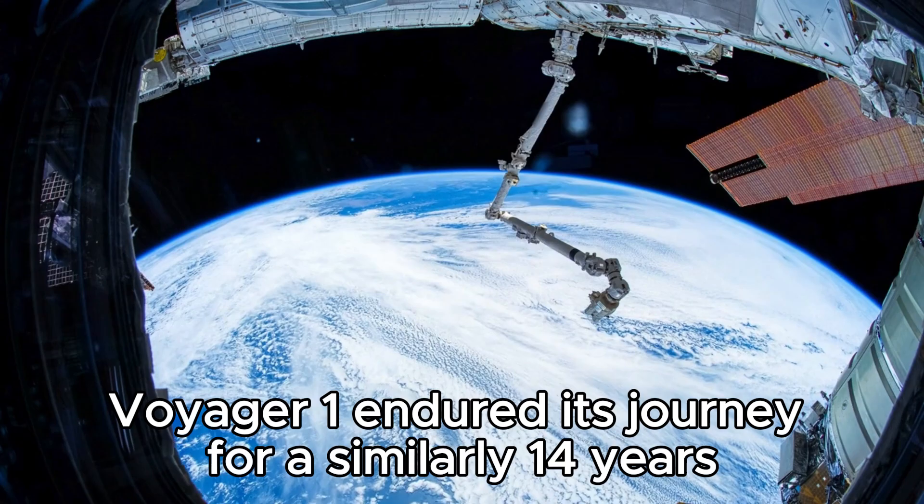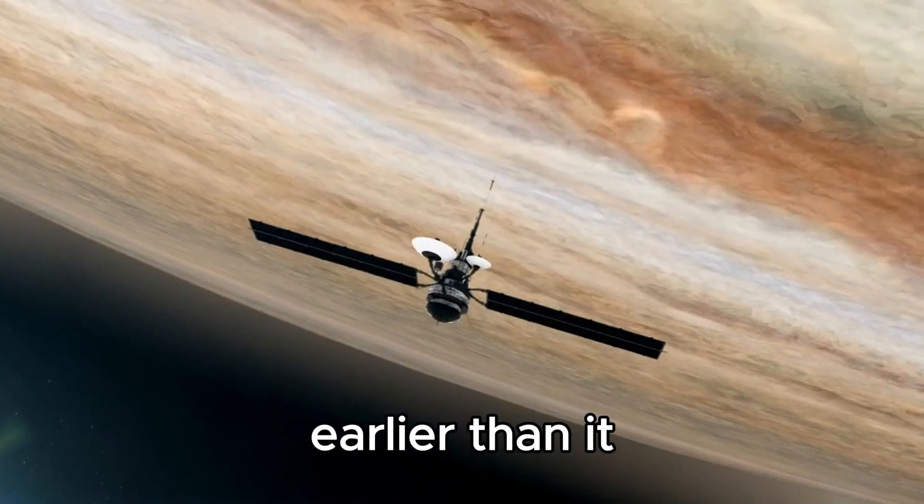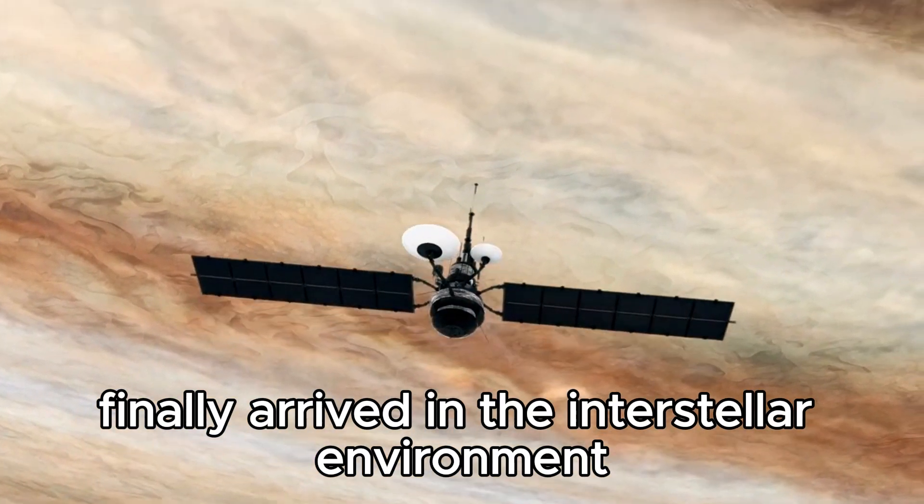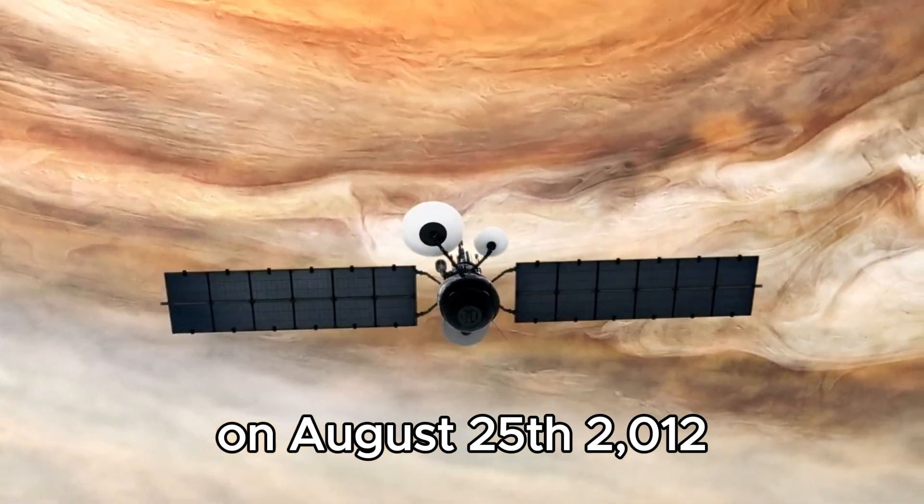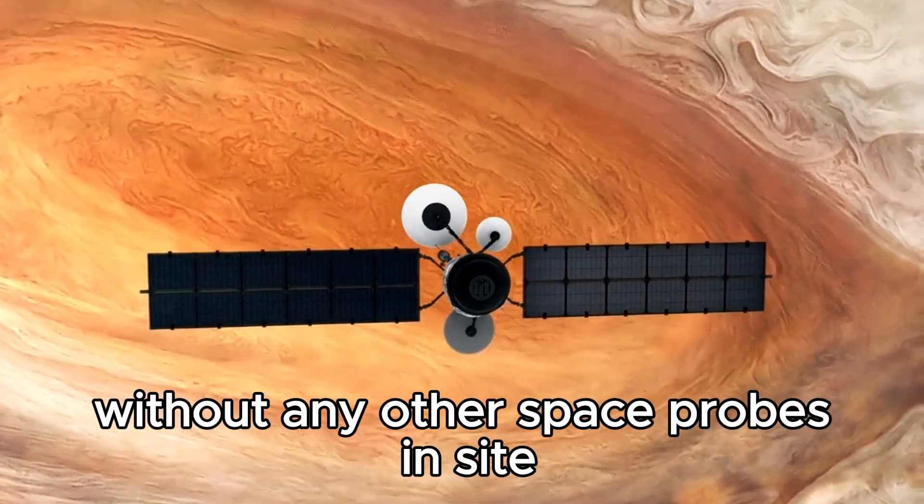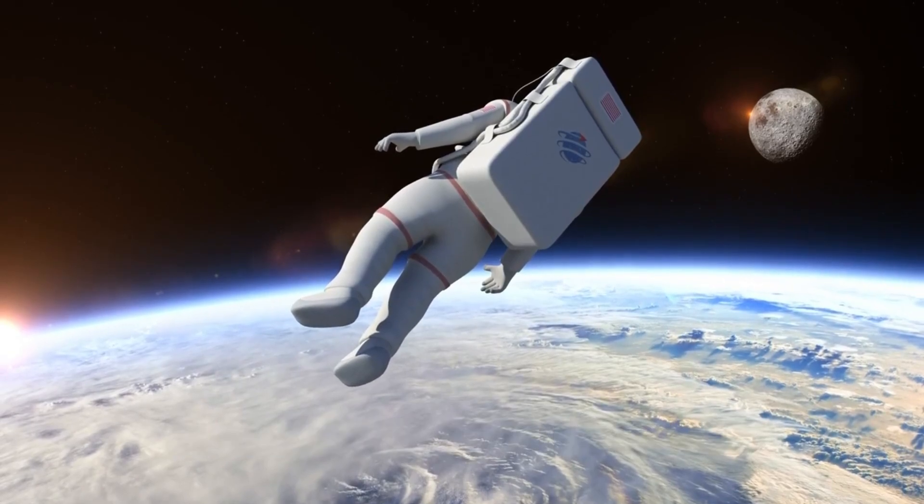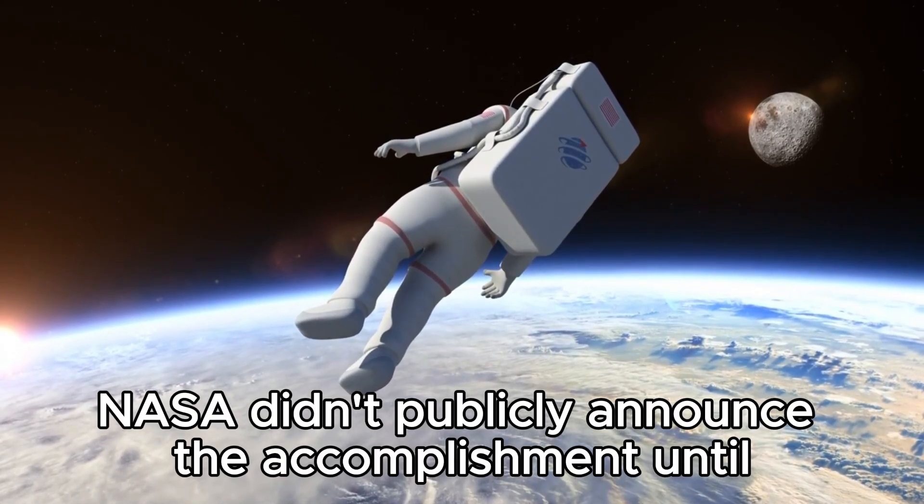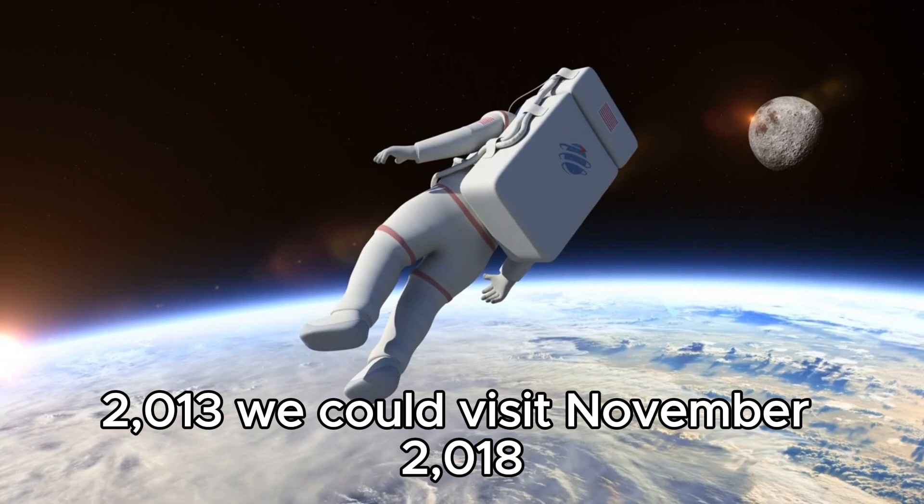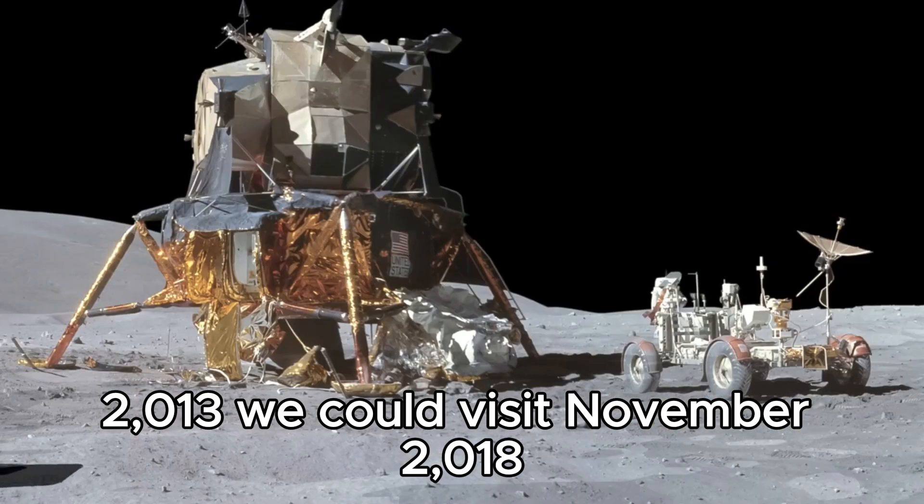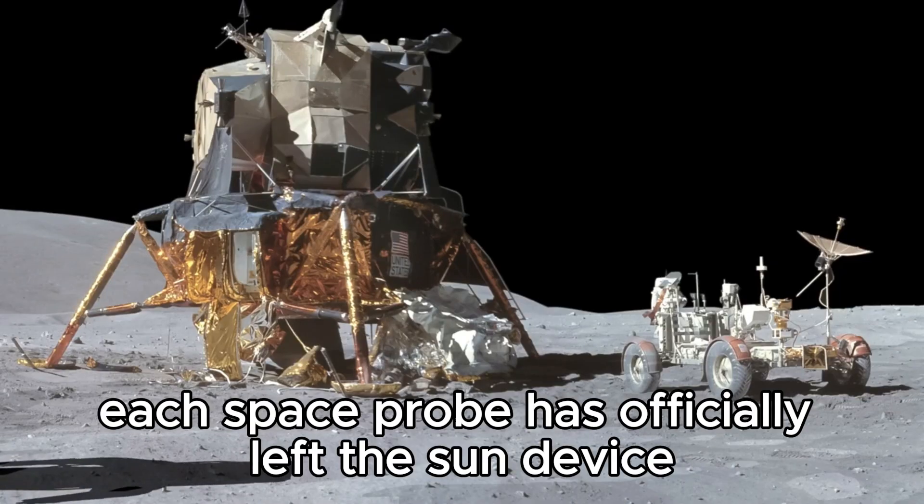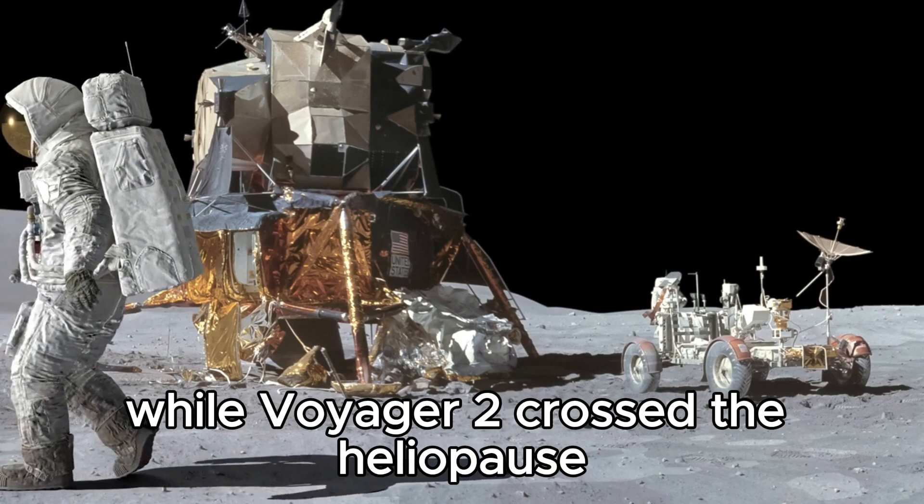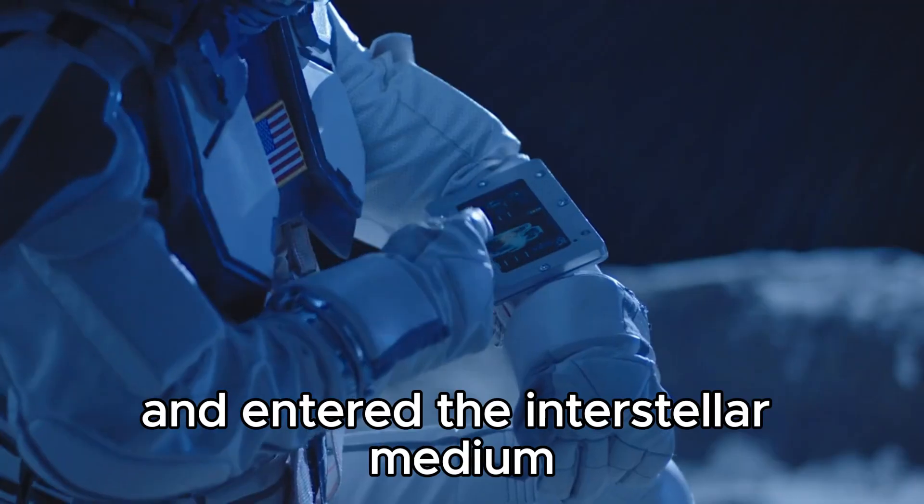Voyager 1 continued its journey for a further 14 years before it finally arrived in the interstellar environment on August 25, 2012, without any other space probes in sight to catch up with. However, NASA didn't publicly announce the accomplishment until 2013. By November 2018, each space probe had officially left the solar system when Voyager 2 crossed the heliopause and entered the interstellar medium.